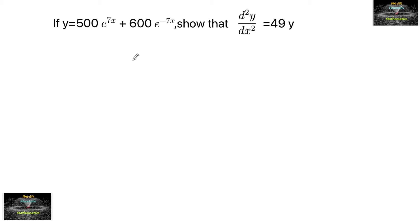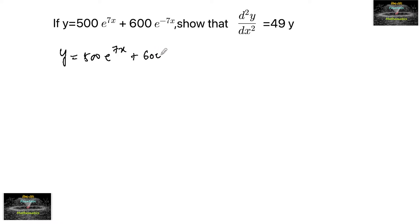If y is equal to 500e to the power of 7x plus 600e to the power of minus 7x, then show that d²y/dx² is equal to 49 times of y.